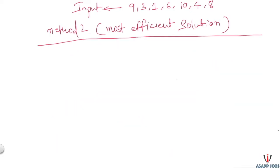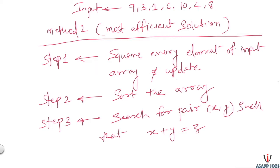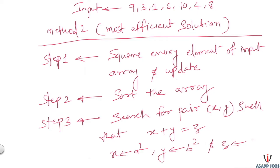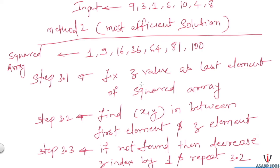Now let's see method two, the most efficient solution. It involves three steps: step one, update every element of the array by squaring it; step two, sort the squared array in increasing order; step three, search for a pair x and y such that x + y = z, where x = a², y = b², and z = c². Let's dig into step three to understand how we find the triplet.